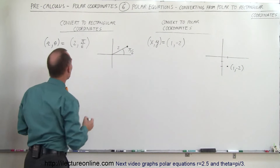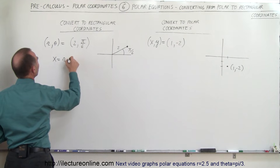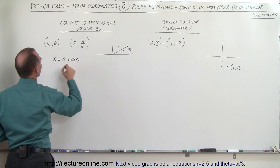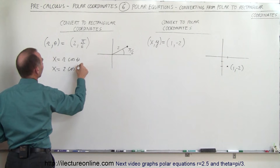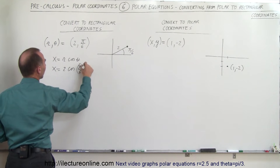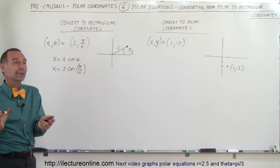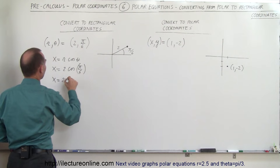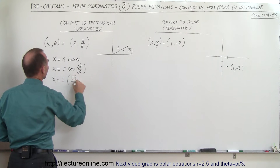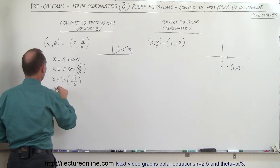How do we convert polar to rectangular coordinates? We know that X is equal to R times the cosine of theta. So X equals 2 times the cosine of pi divided by 6. Pi over 6 is 30 degrees, and cosine of 30 degrees is square root of 3 over 2. So X equals 2 times square root of 3 over 2, and 2 divided by 2 gives 1, so X equals the square root of 3.